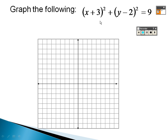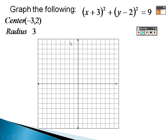For this circle, the center uses opposites: positive 3 becomes negative 3, negative 2 becomes positive 2, so center is (−3, 2). The radius is the square root of 9, which is 3. Go over 3, up 3, over 3, down 3, connect it with a circle.